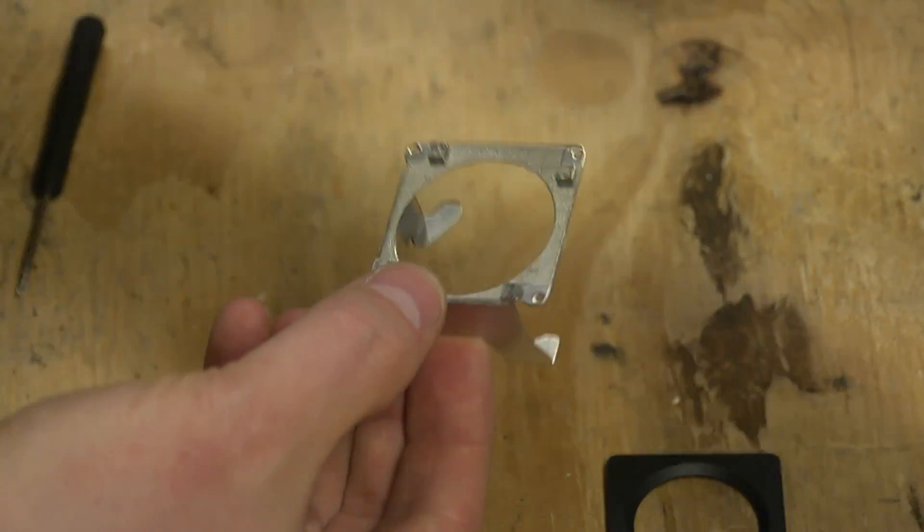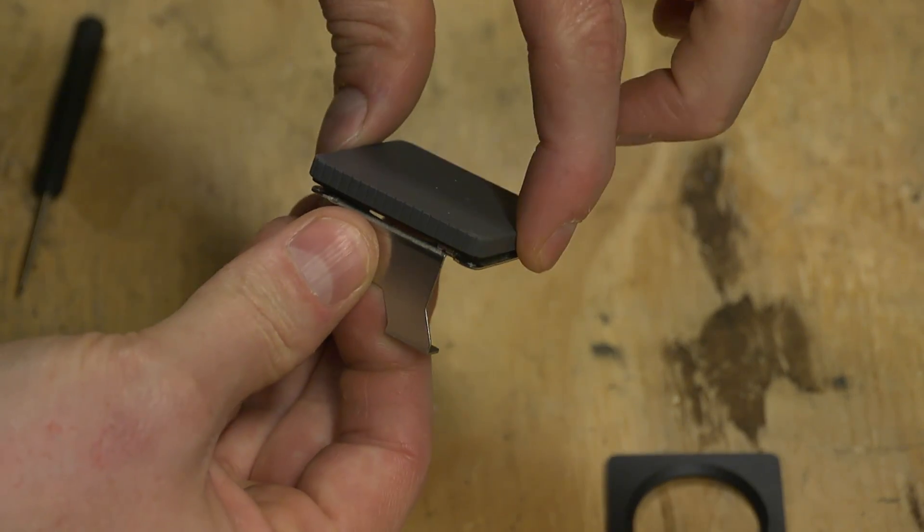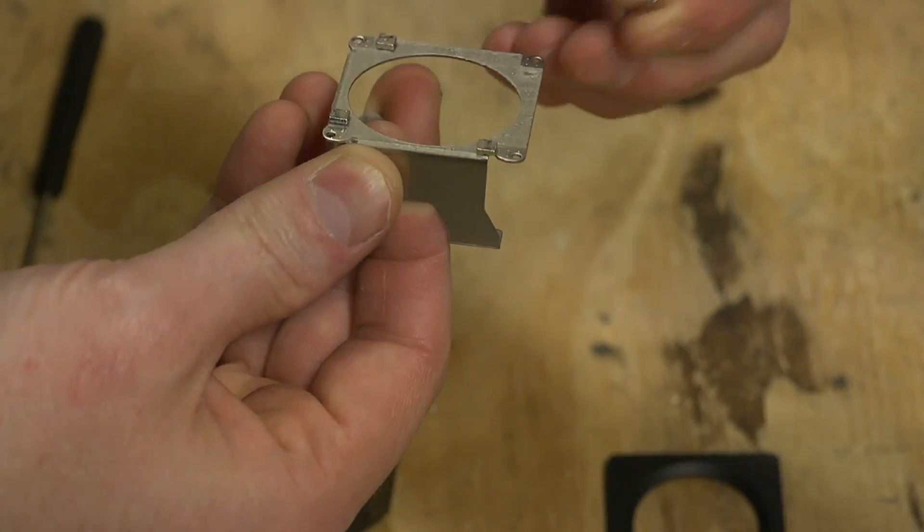And those magnets that hold the lens cover on, they're pretty strong. They come right off too if you want to use them for something.